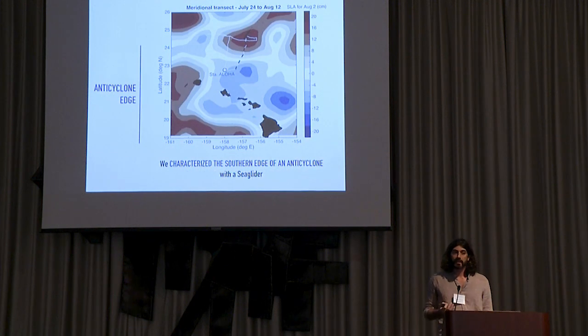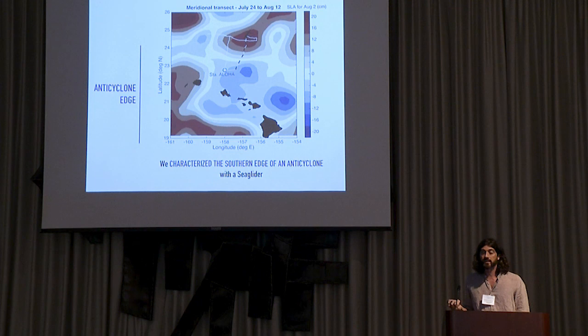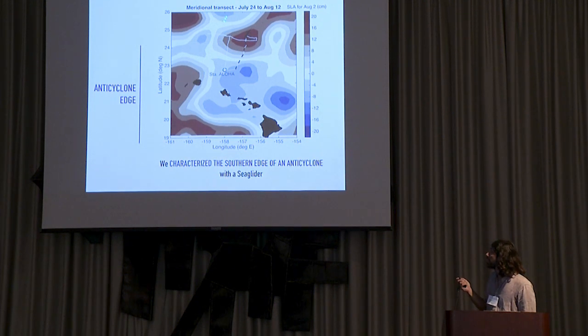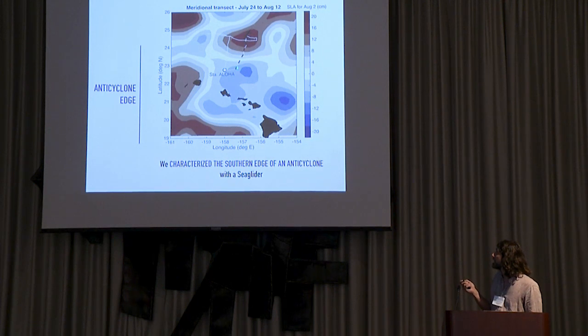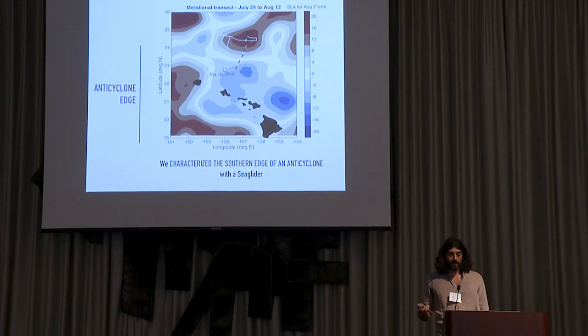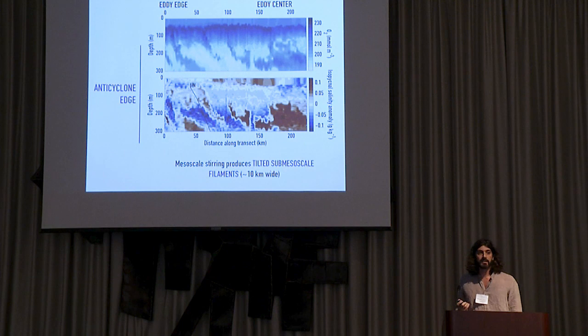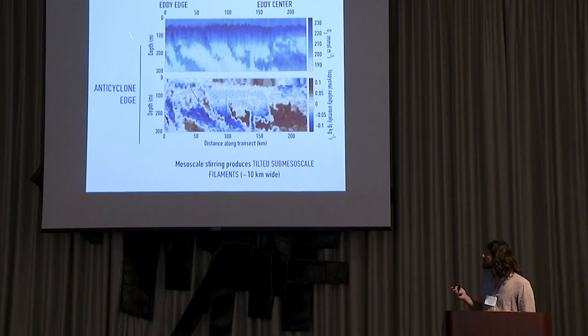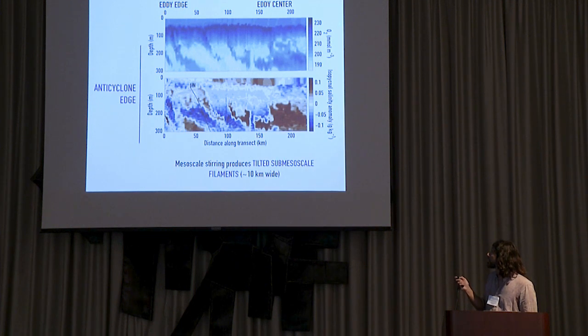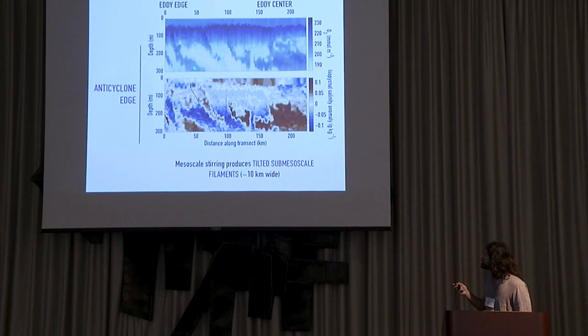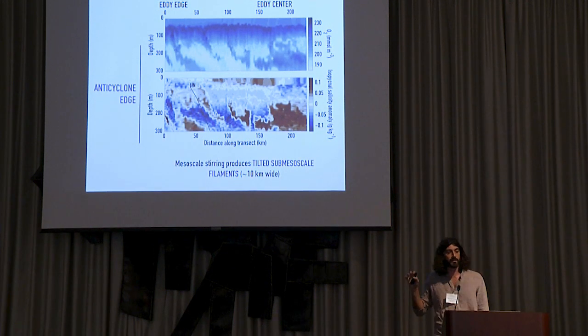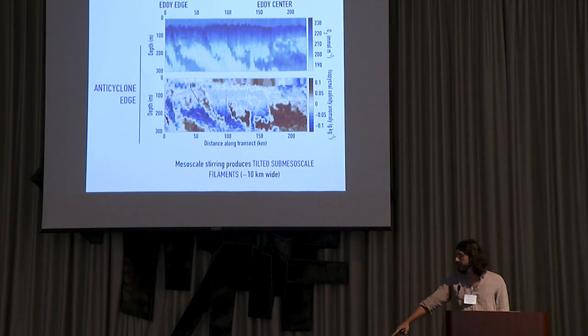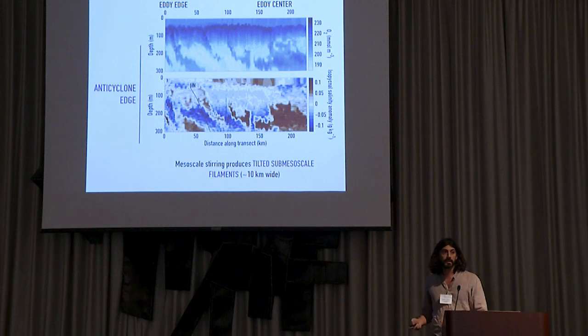The second example is still about eddies. This is an anticyclone we explored on its southern edge, from 2015. This is the transect I'm showing you. We characterized the southern edge of the anticyclone. In this case, we saw something unexpected and we had to discuss what we were seeing. In this transect where the edge of the anticyclone is here and the center is here, the oxygen concentration showed these clear tilted plumes of positive oxygen concentration.